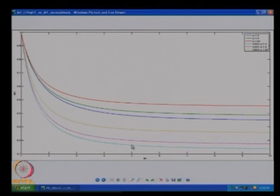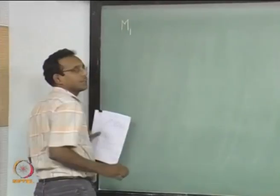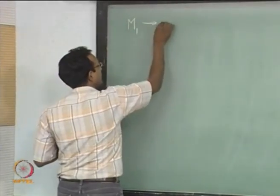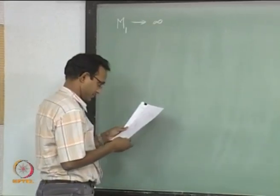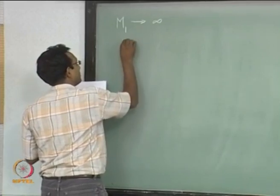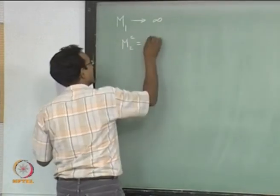U2/U1 is also almost a constant after that point. We can find a value for the high Mach number approximation, which is what we start with today. We will go to the board and find the asymptotic values. We are thinking about incoming Mach number M1 tending to infinity. We have the expression for M2 squared — we derived all these normal shock relations.